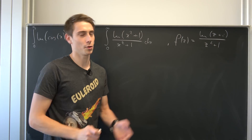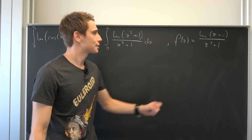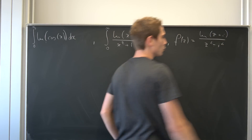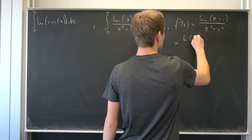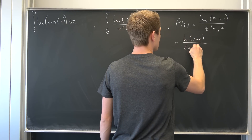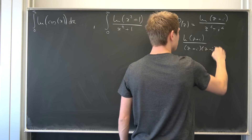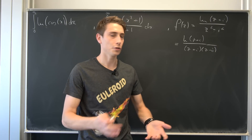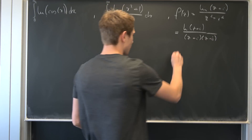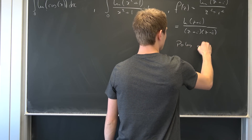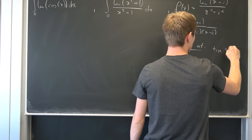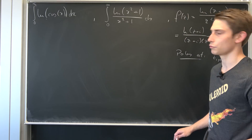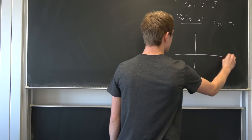Bear with me for a minute. This denominator — z² + 1 — is nothing but negative i squared, which is just the difference of two squares. So let's break this up into the natural log of (z + i) over (z + i)(z − i). We have two poles right here on this function, one being i and the other being negative i. So our poles are at z₁ and z₂ equal to positive or negative i.